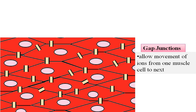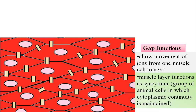Gap junctions allow movement of ions from one muscle cell to the next. Thus, each muscle layer functions as a syncytium. A syncytium refers to a group of animal cells in which cytoplasmic continuity is maintained. As each muscle fiber is connected to the next by gap junctions, cytoplasmic continuity is maintained, and therefore muscle layers of the gastrointestinal tract function as a syncytium.